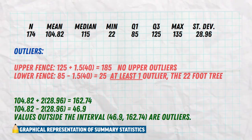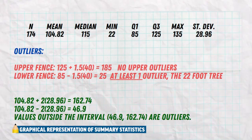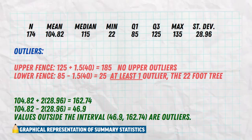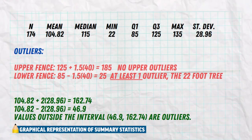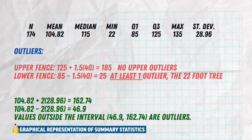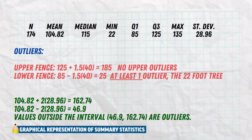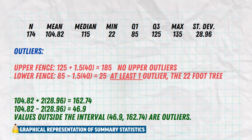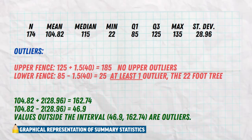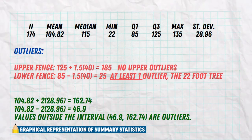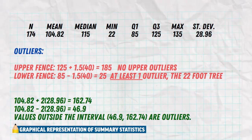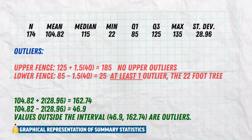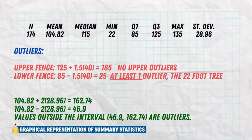Without knowing every single individual data point, there could be more outliers — for example, a tree that's 23 or 24 feet would also be below 25. But we don't know all those values, we only know the min, so it's important to emphasize that there's at least one outlier but there could be more — without the full data, we don't know.